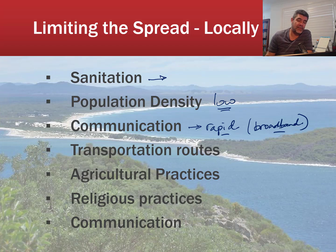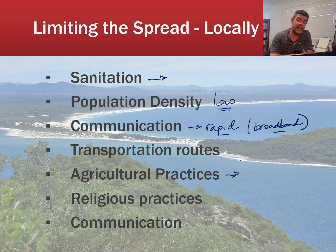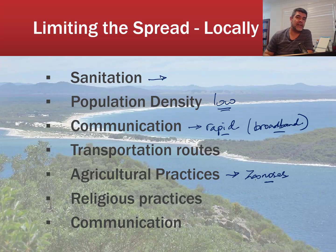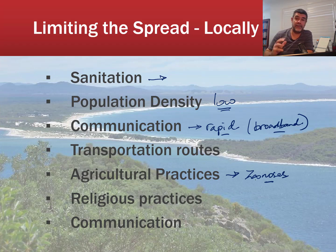Transportation routes can be a problem during tourist times — not so much a problem if you're trying to isolate a community, but a problem if you're trying to get people out of a particular area. Agricultural practices have potential not just for zoonoses, but also practices associated with agriculture can decrease or increase the potential for exposure to pathogens. Sometimes certain religious practices can also increase or decrease the movement of pathogens from one host to another. Certainly when COVID outbreaks occurred, religious communities and religious practices and the restrictions placed on some of those were treated with a fair amount of seriousness.